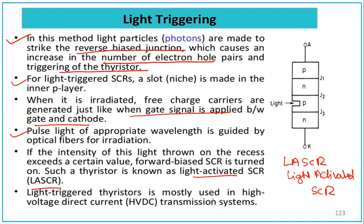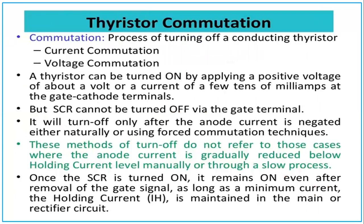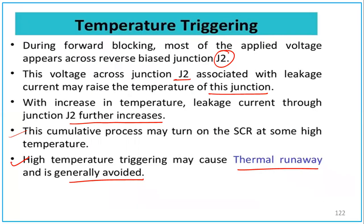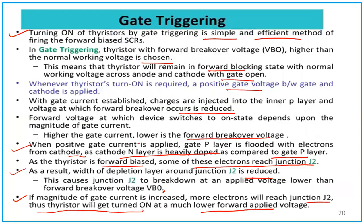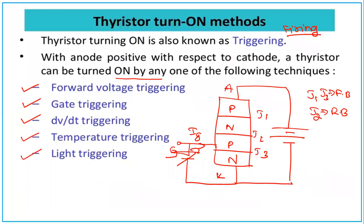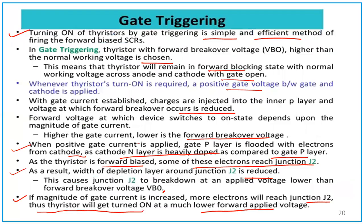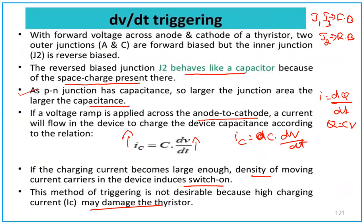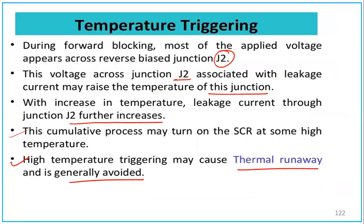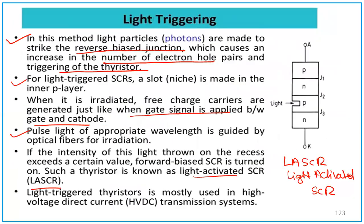To summarize, all five methods — forward voltage triggering, gate triggering, dV/dt triggering, temperature triggering, and light triggering — are now covered. This can be a 5 to 8 marks university exam question.